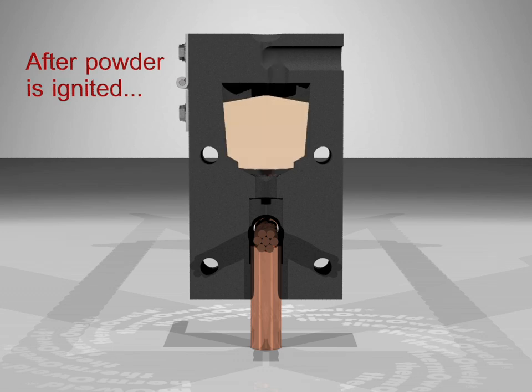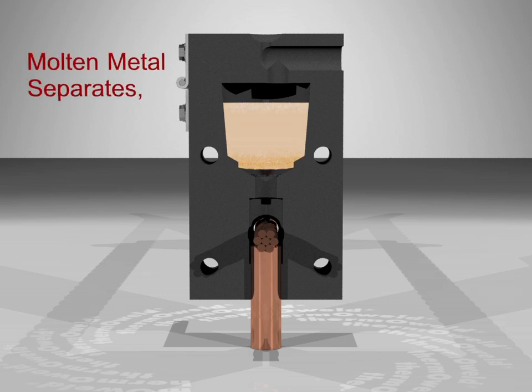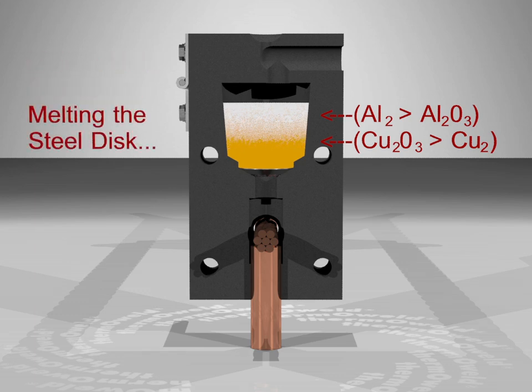The spark from the flint igniter causes a reaction within the weld metal, melting and separating the metals. The molten metal melts the steel disc, allowing it to flow into the weld cavity, creating a permanent connection.